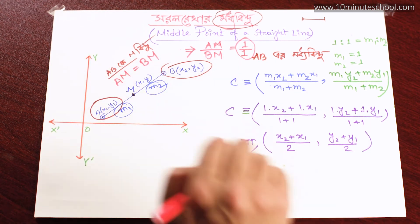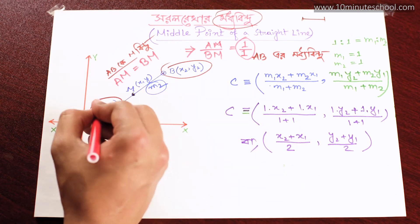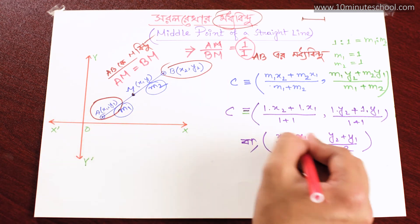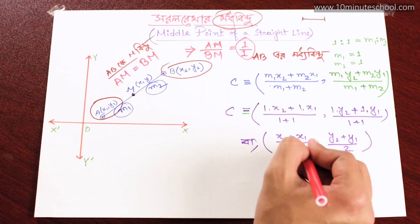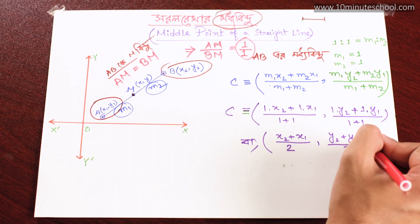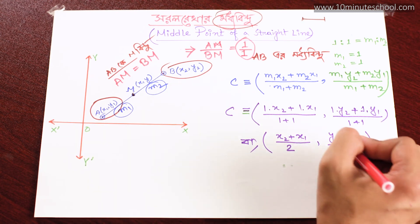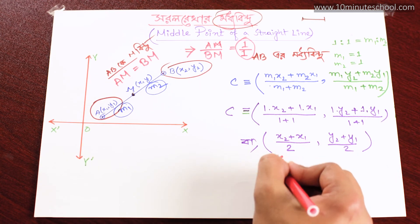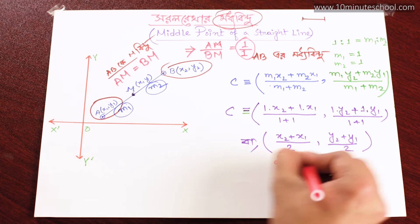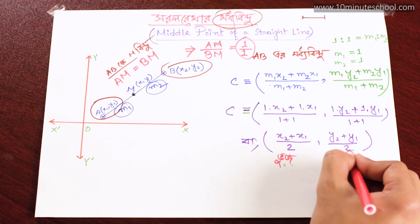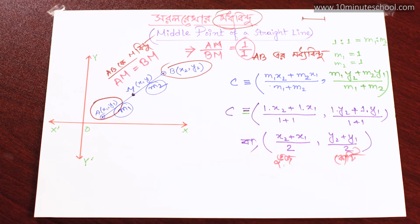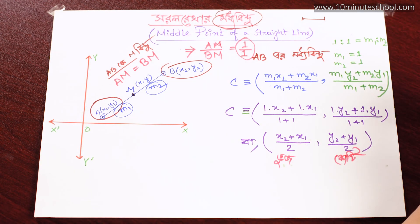So the midpoint formula gives: x2 plus x1 divided by 2, and y2 plus y1 divided by 2. Take care.